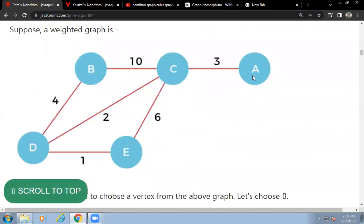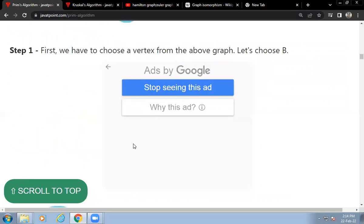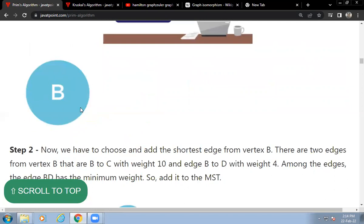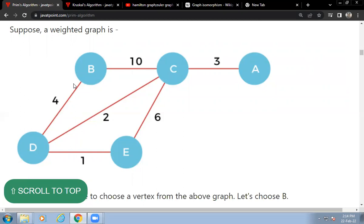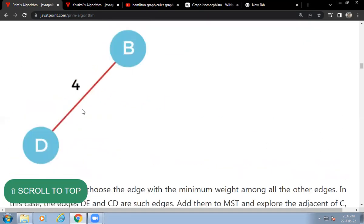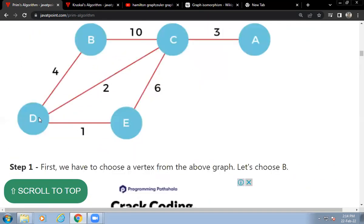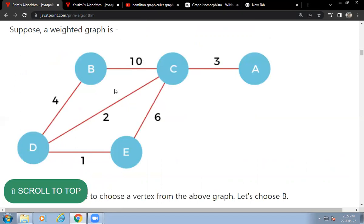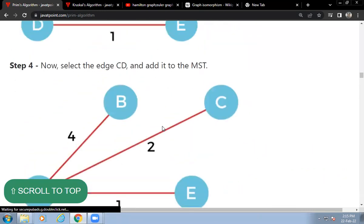We have vertices B, C, A, D, E. First we have to choose a vertex from the above graph. Let's choose B. The minimum edge is 4, so we select D. Now from D we can select the minimum, which is 1 to E.